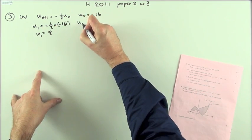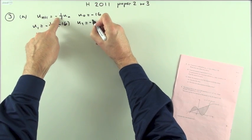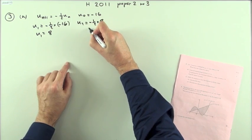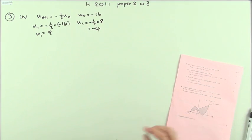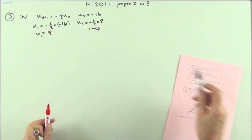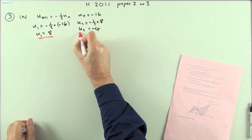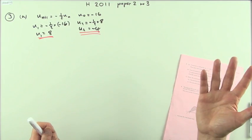And similarly, U2 will still be negative a half times the previous one, which is now 8, so that'll be negative 4. There it is. That was nice and easy to start with but it was only one mark.